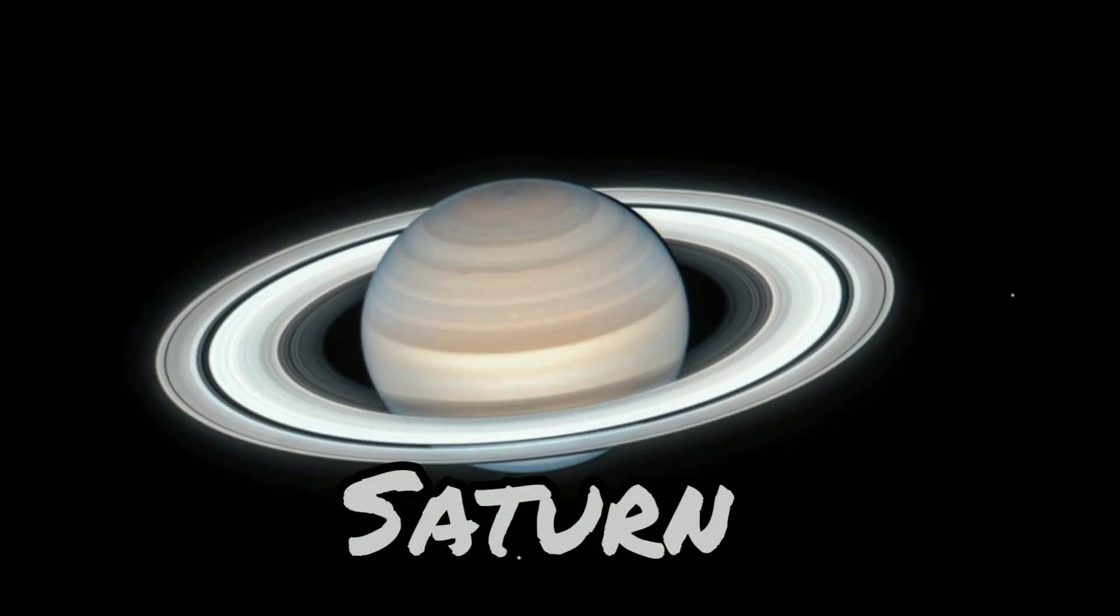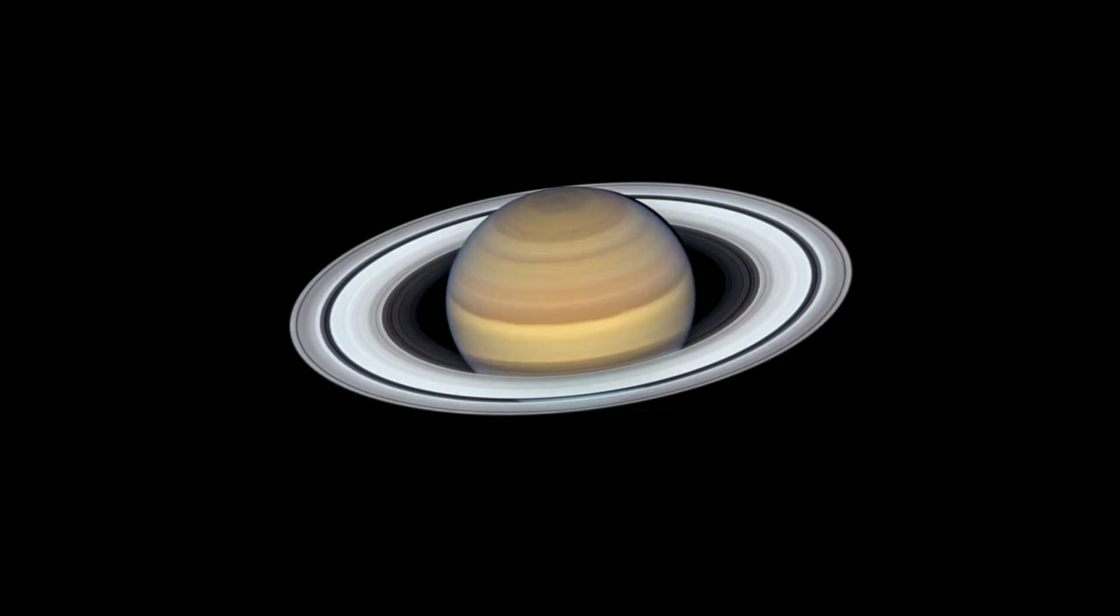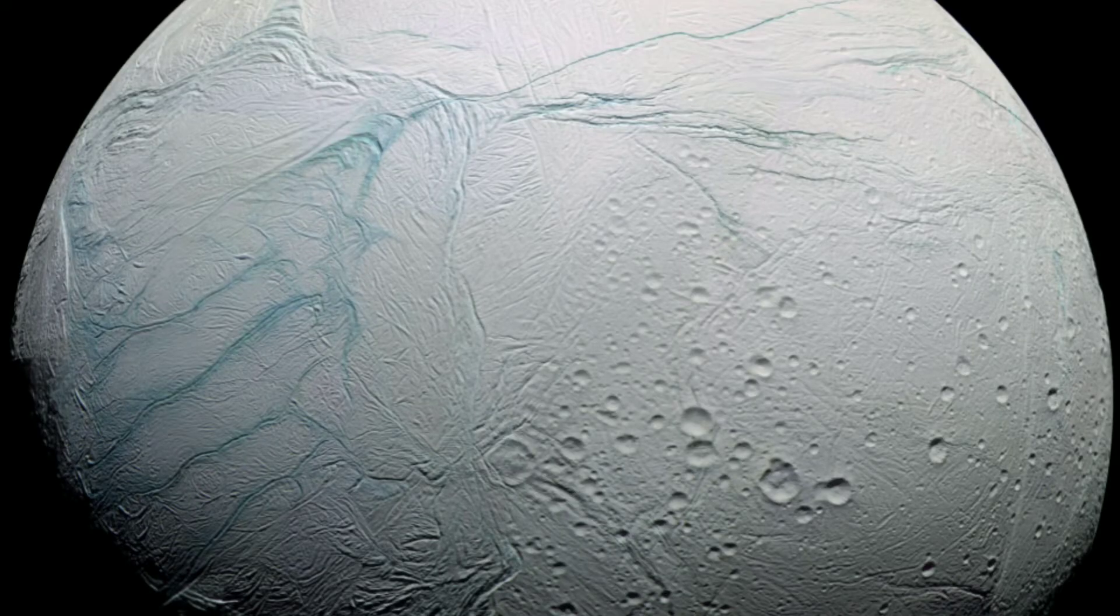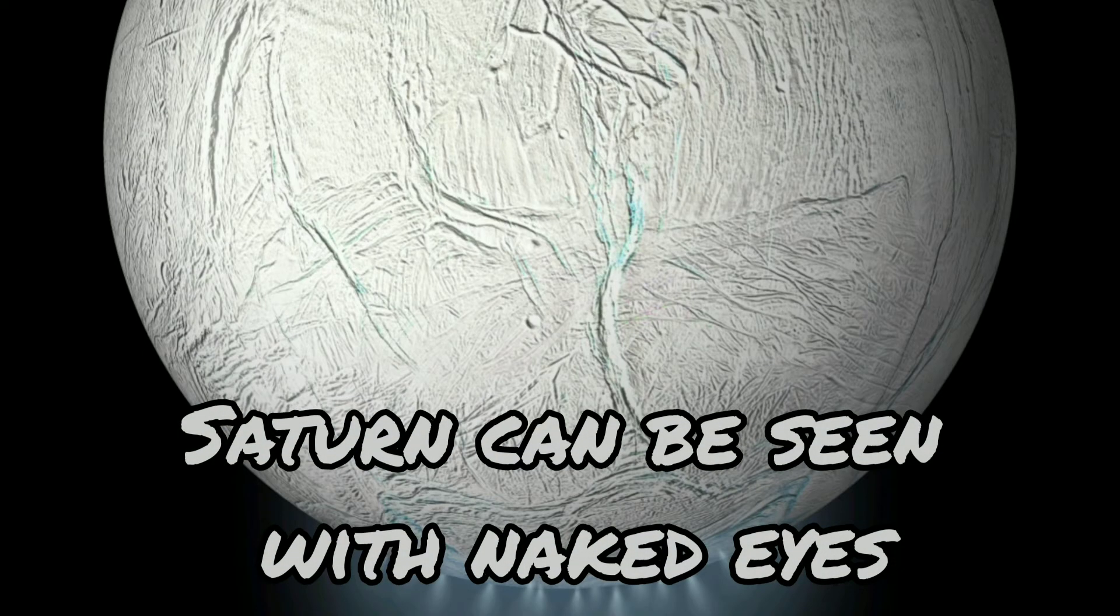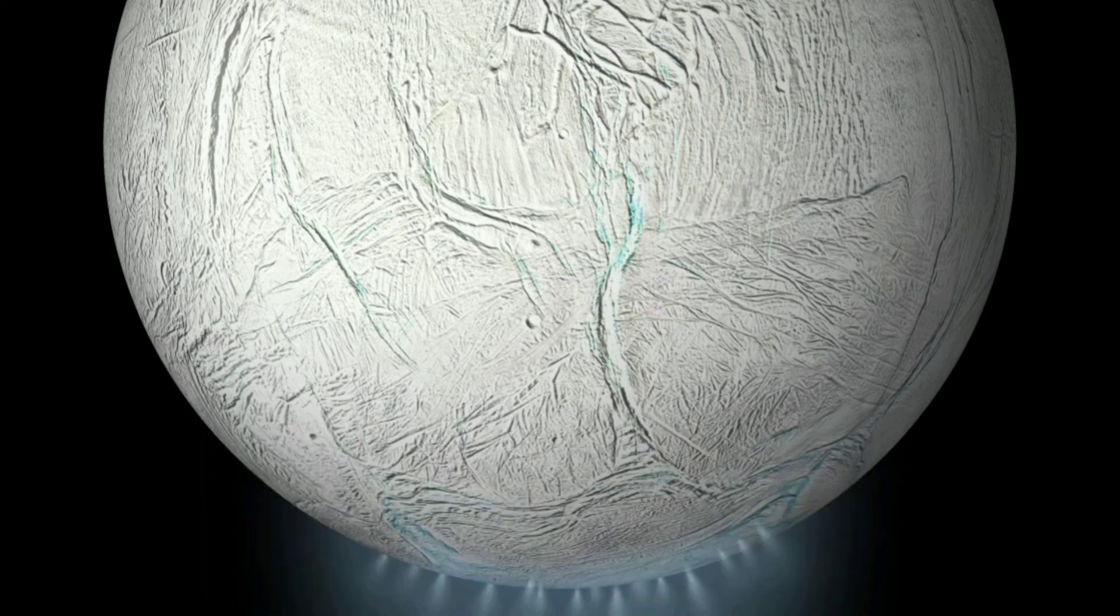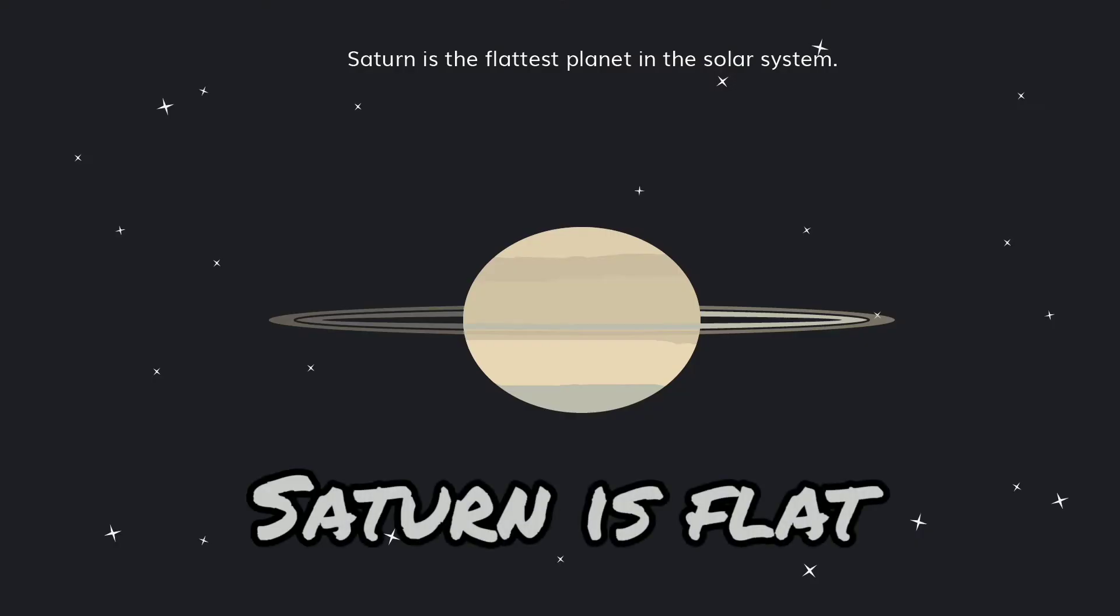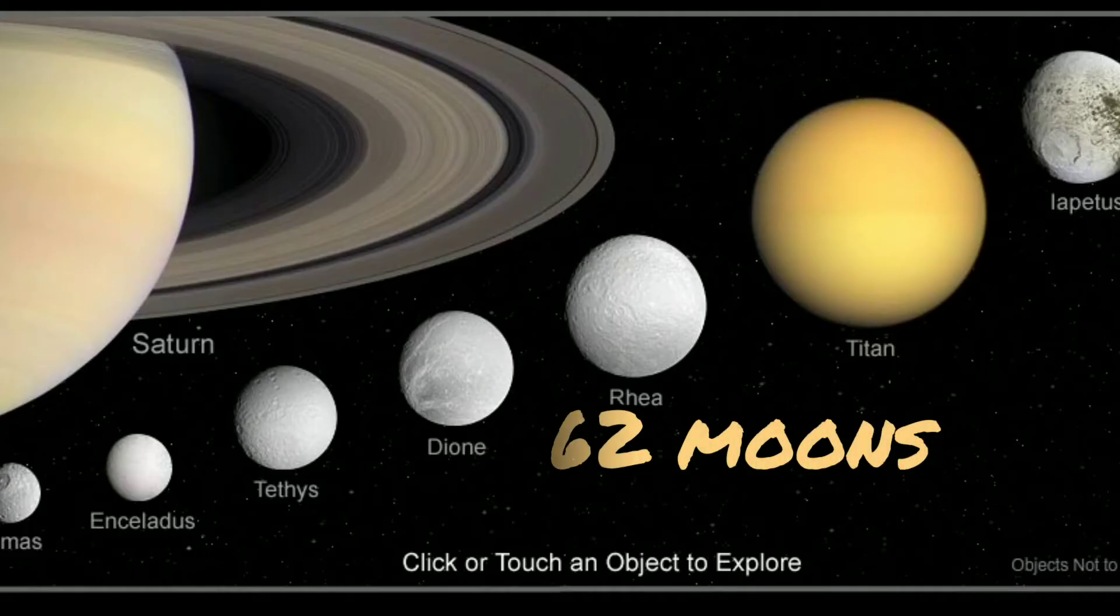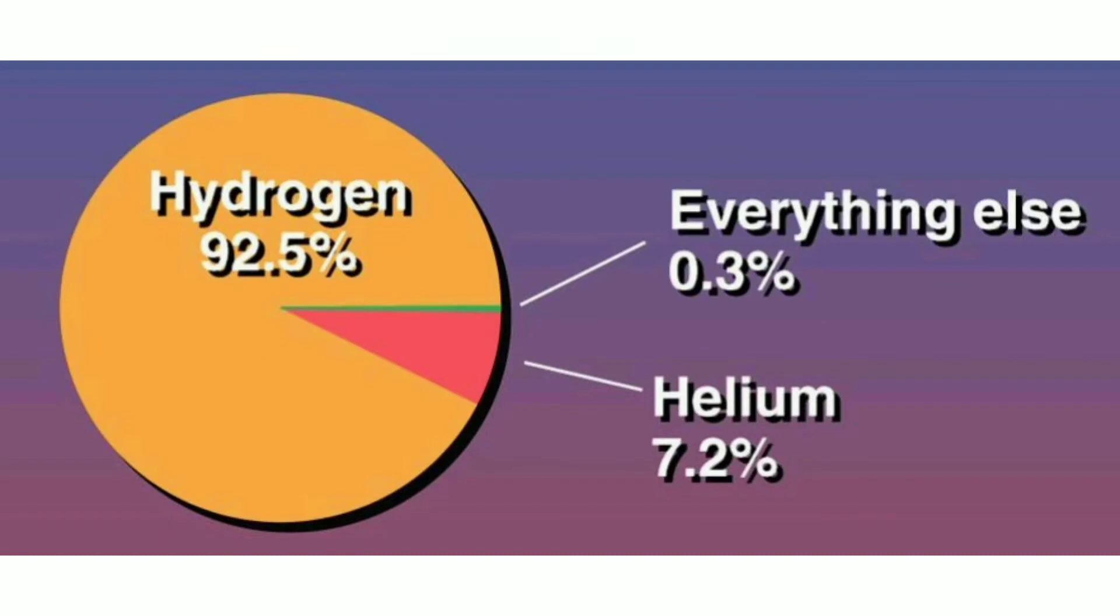Saturn is the sixth planet of the solar system. Saturn has thousands of beautiful ringlets. The rings of Saturn are made of ice and rocks. Saturn is the most distant planet that can be seen with naked eyes. It is the flattest planet. Saturn has 62 moons. Saturn has mostly hydrogen and helium.